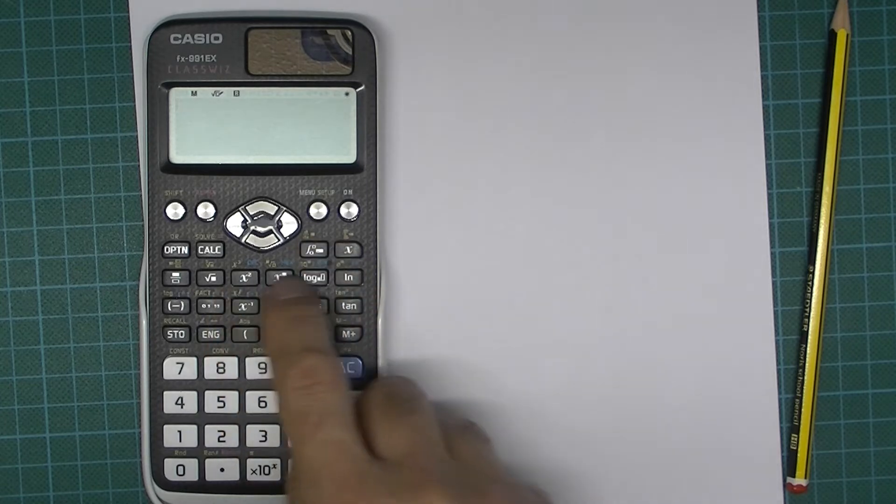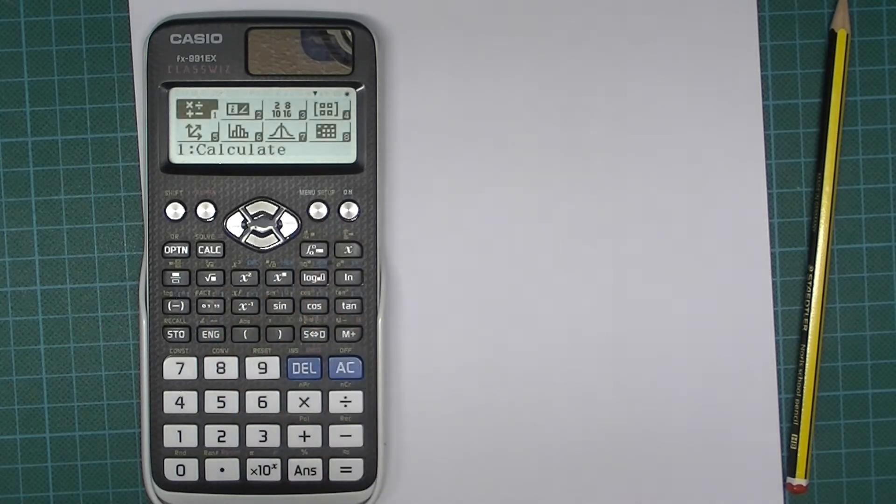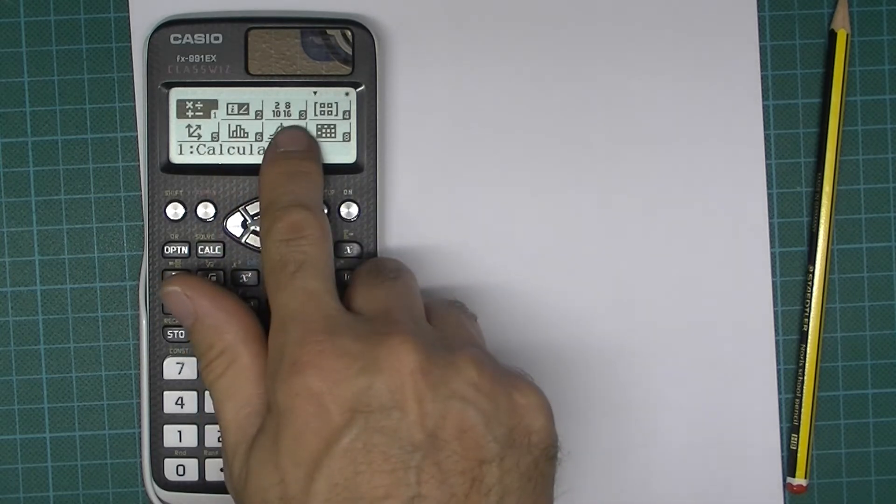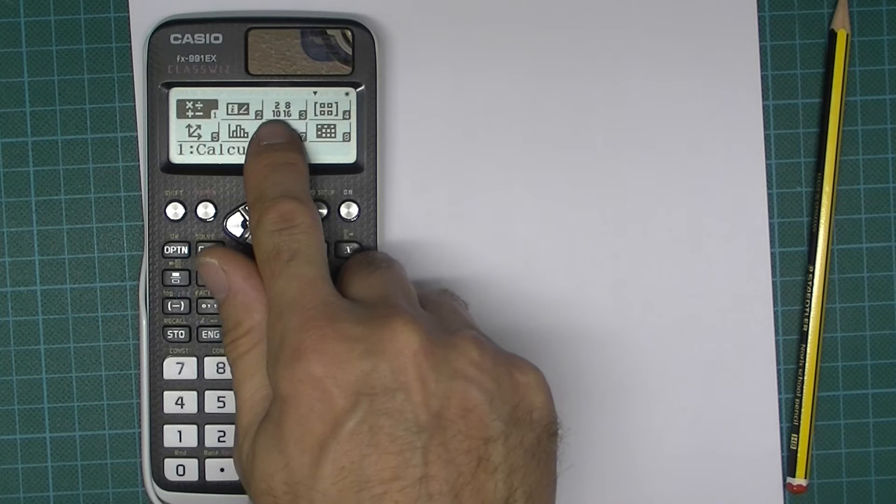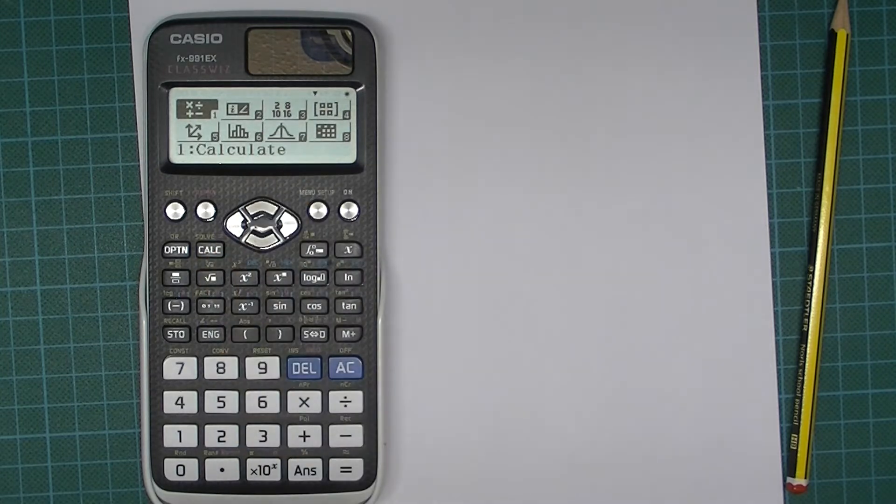To get into say binary we're going to need to click menu and then this is the different base system so 2 is binary, 8 octal, 10 decimal and 16 of course is hexadecimal.